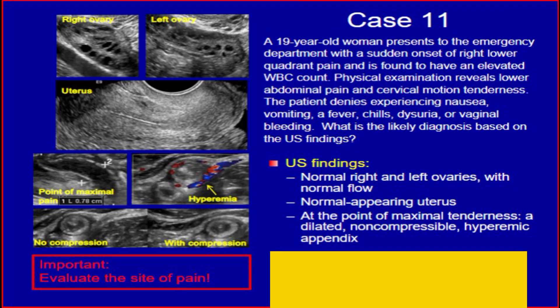Case 11. A 19-year-old woman presents to the emergency department with a sudden onset of right lower quadrant pain and is found to have an elevated white blood cell count. Physical examination reveals lower abdominal pain and cervical motion tenderness. The patient denies experiencing nausea, vomiting, fever, chills, dysuria, or vaginal bleeding. What is the likely diagnosis based on the ultrasound findings?